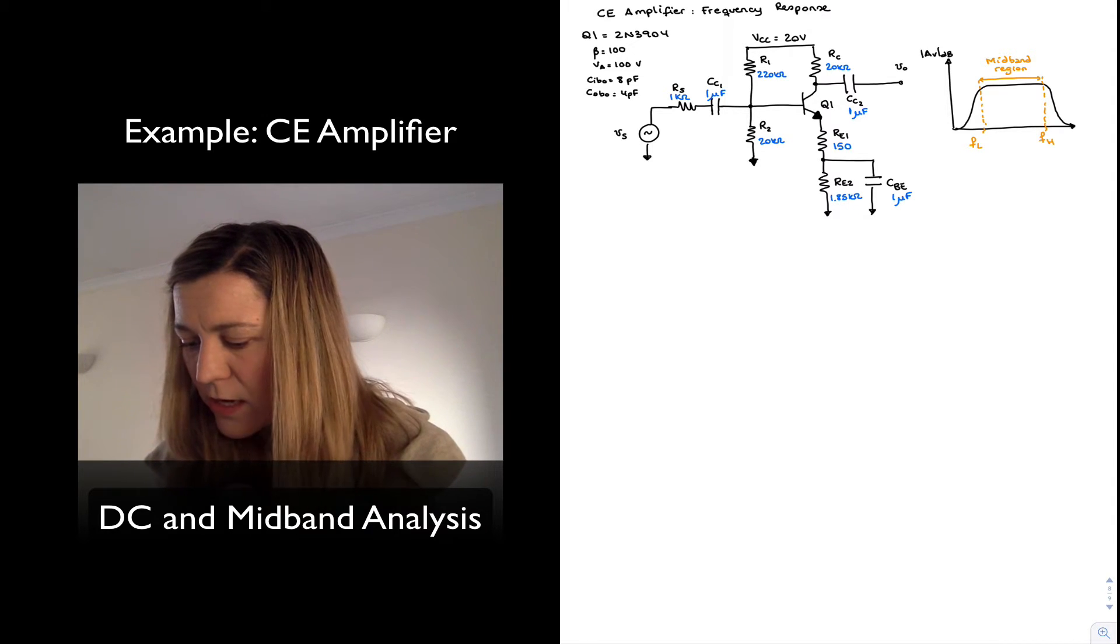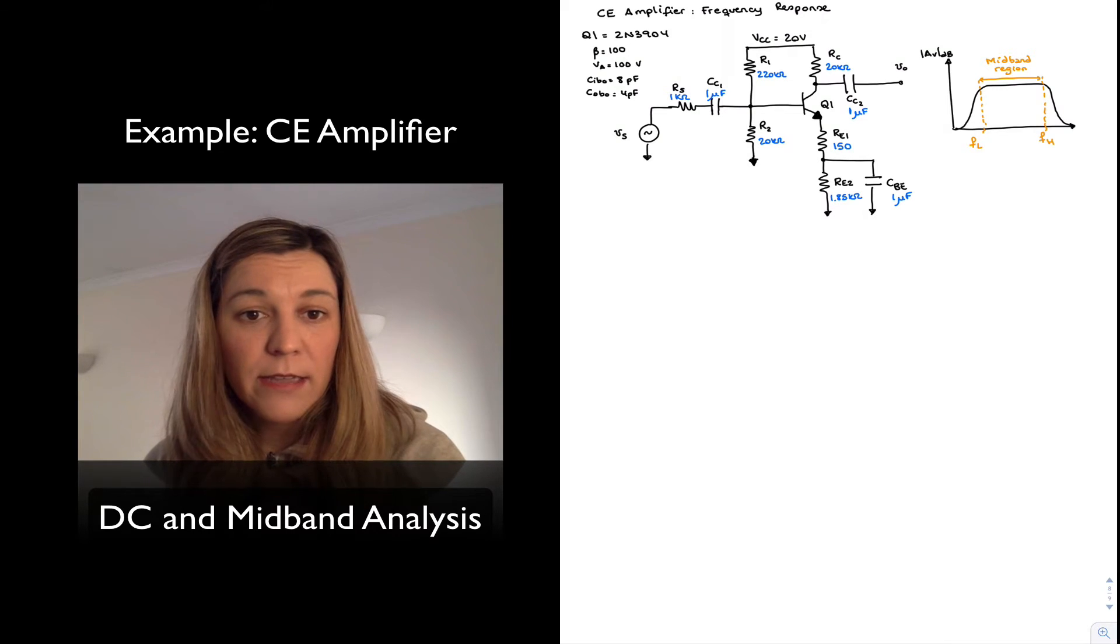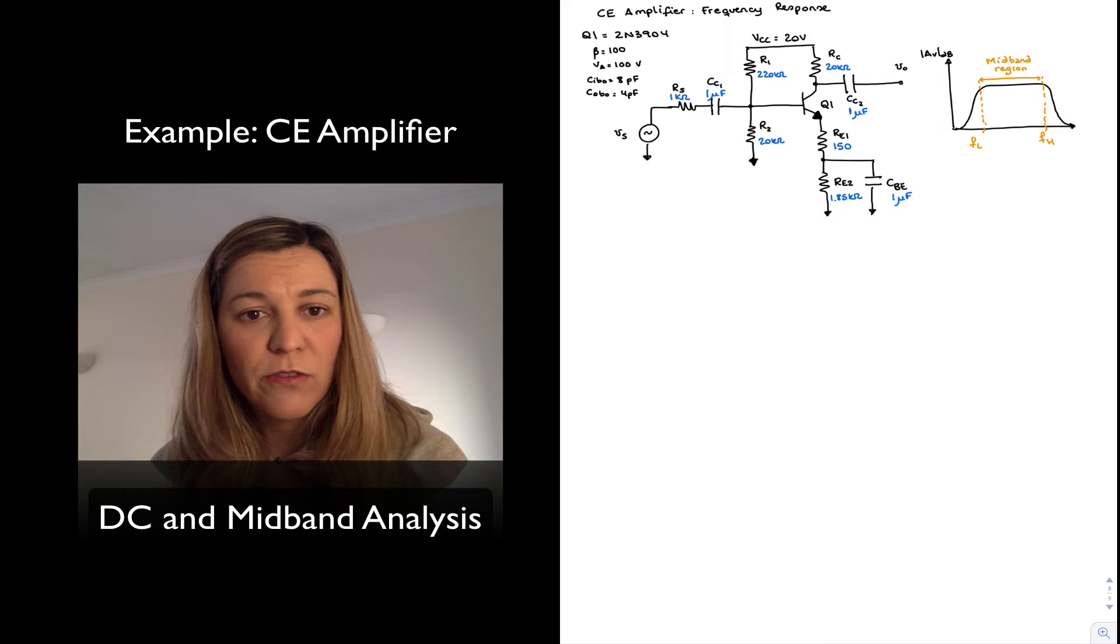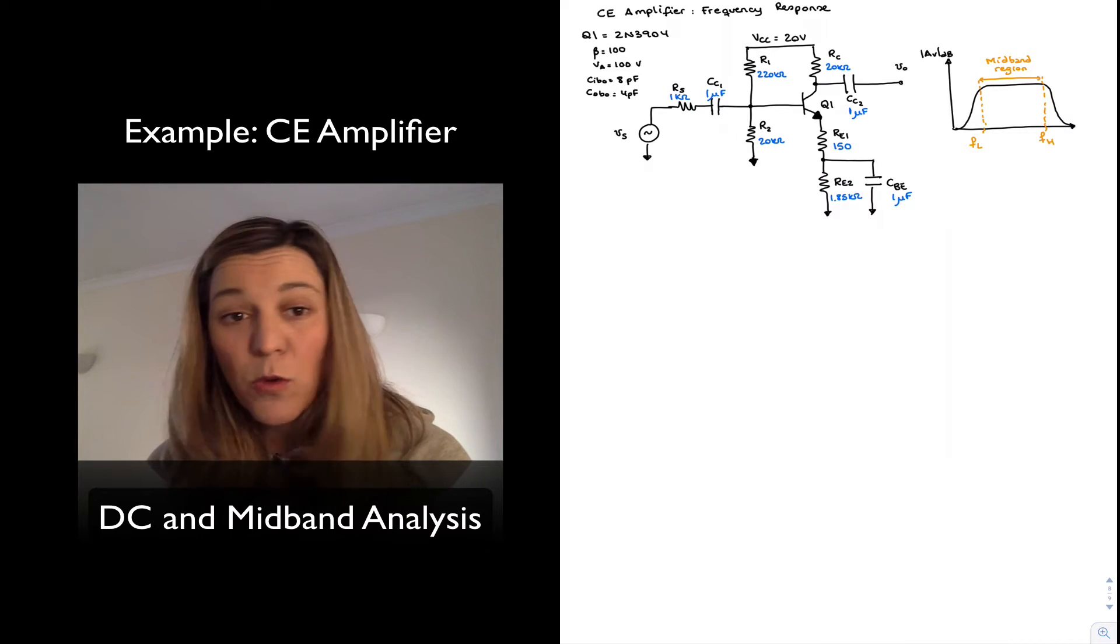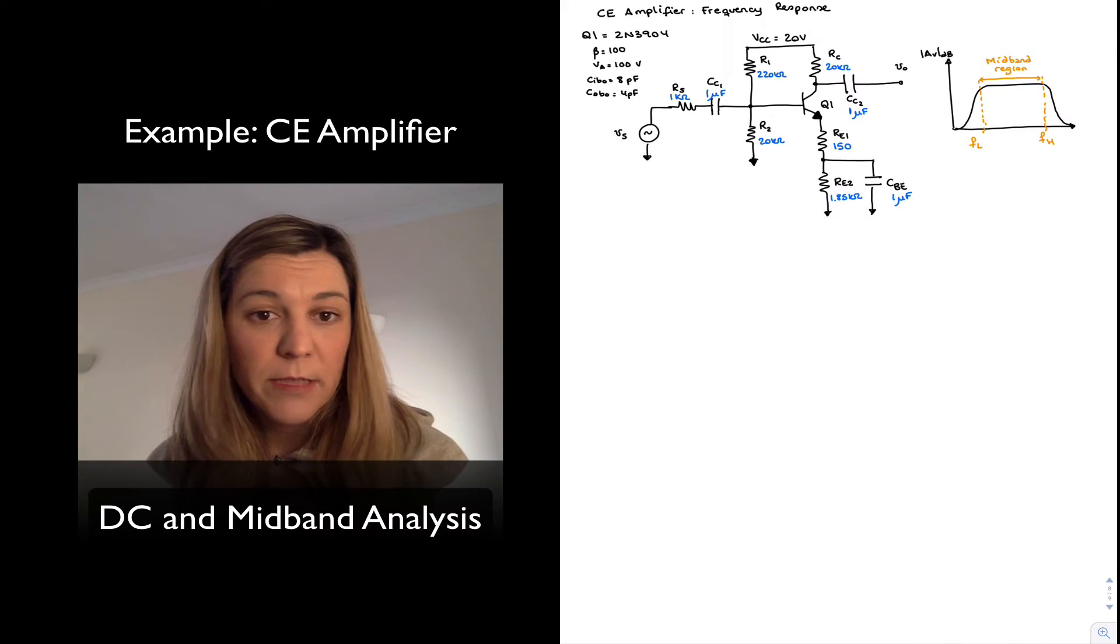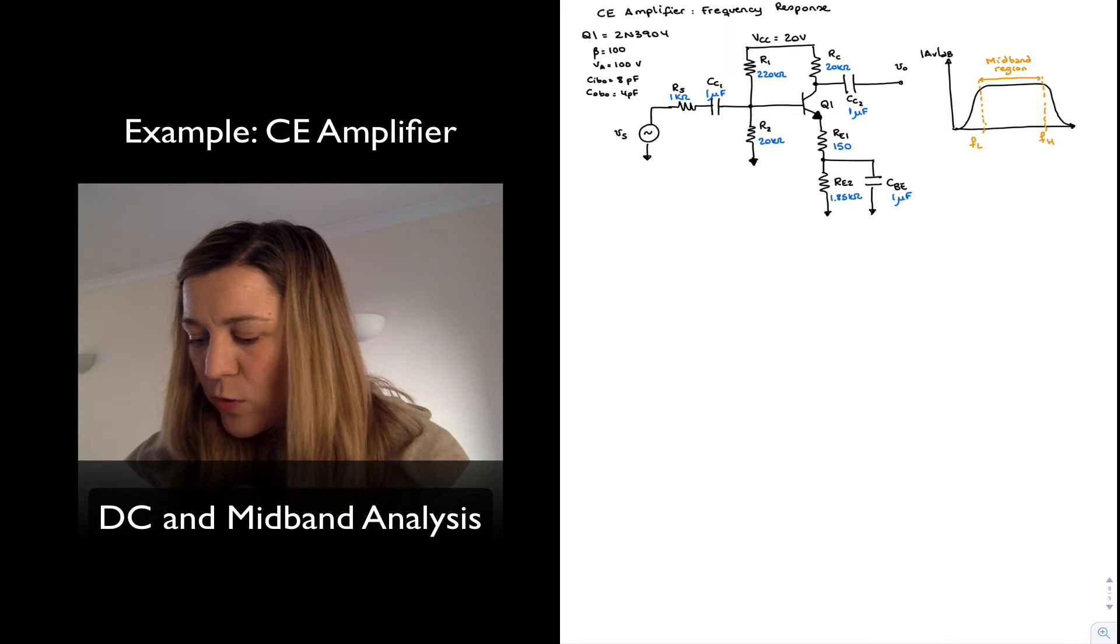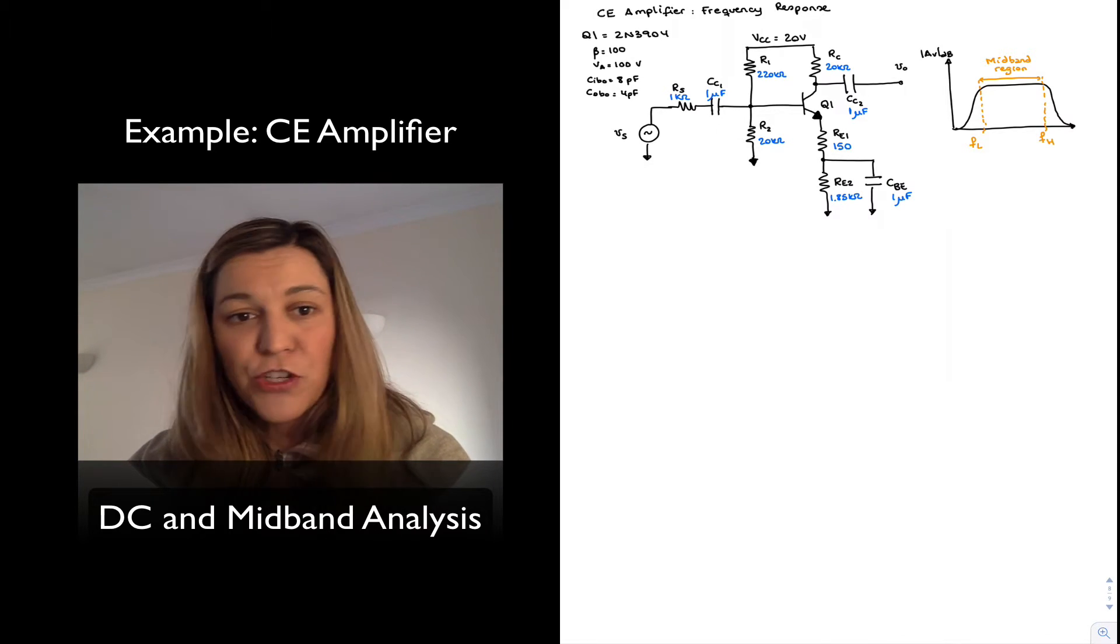And then I have drawn on the right-hand side the characteristic frequency response, in this case just the magnitude response, part of the frequency response for a common emitter amplifier or really any transistor amplifier, where we have the general shape of a bandpass filter. And then we have two cutoff frequencies, a low cutoff frequency fL, a high cutoff frequency fH.